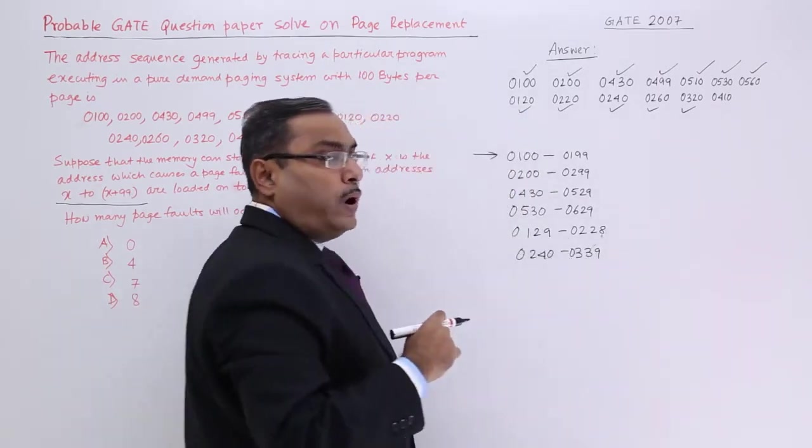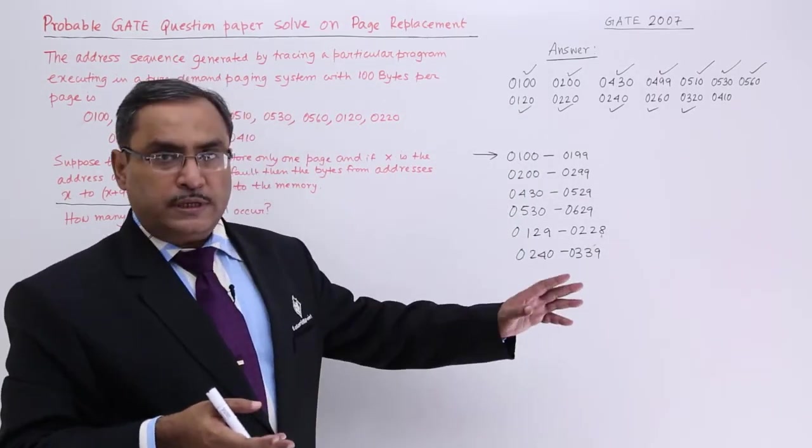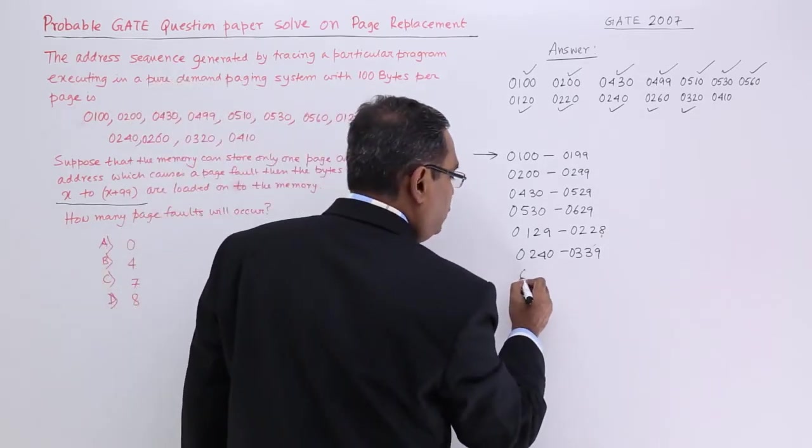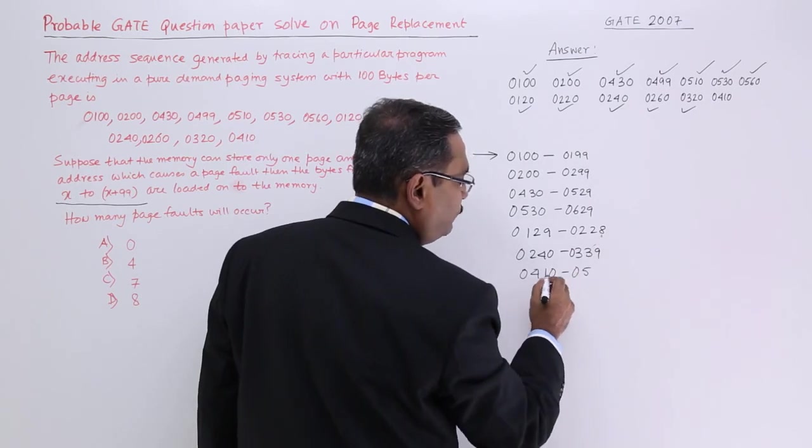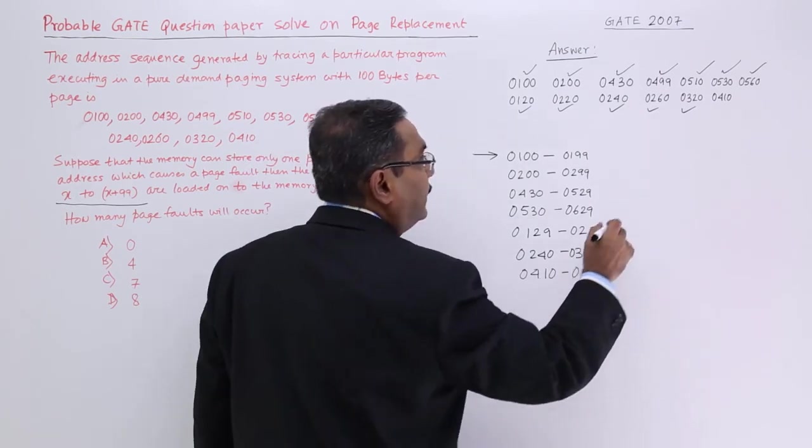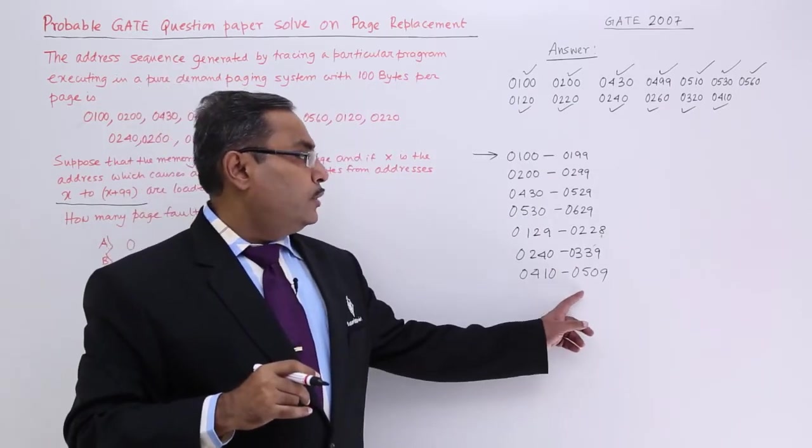Now, 410. 410 means you know that it is outside of this limit. So now, 0410 to 0509. It will get loaded up to this. Now, it has got loaded.